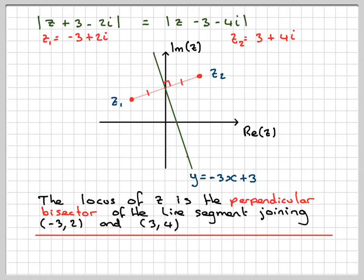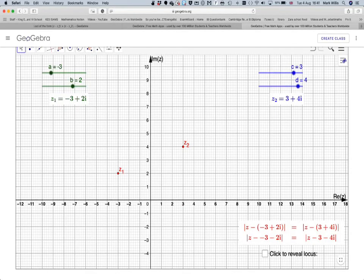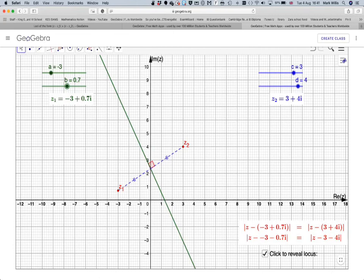Now we can look at this on this GeoGebra app, and I'll put the link in the notes of the video. So here we have our two complex numbers z1 and z2. If we click down here, we will see that this gives me the perpendicular bisector of those two points. And the great thing about this app, of course, is you can move it around and do other values of complex numbers.